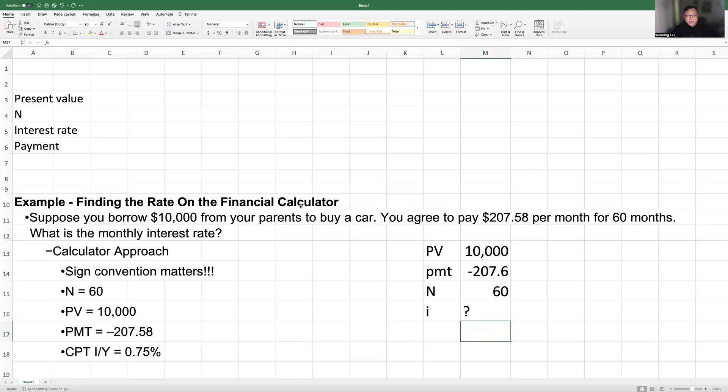So now first we can use a financial calculator. You enter 60, press the button N. So you assign N equals 60. You enter the $10,000 and then press the PV button, and assign this value to the present value. And when you enter the payment, make sure you are aware of the negative sign. So you have negative $207.58, and you press the payment button. And then you click the button at the left top corner, the CPT representing compute. So you press the CPT button and then press I/Y. This gives you the interest rate 0.75%.